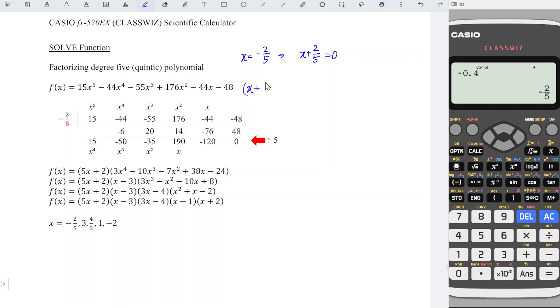By using synthetic division or long division, we should reduce a degree 5 polynomial to a degree 4 polynomial. So we should obtain 15x to the power of 4 minus 50x to the power of 3 minus 35x squared plus 190x minus 120.